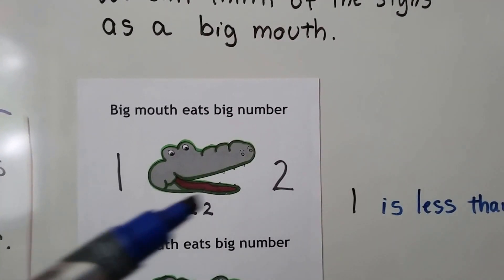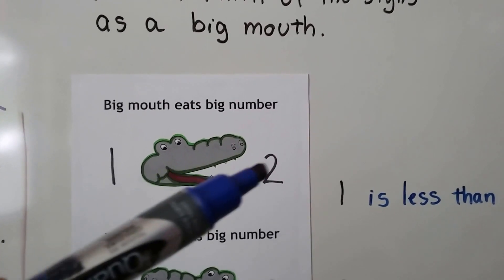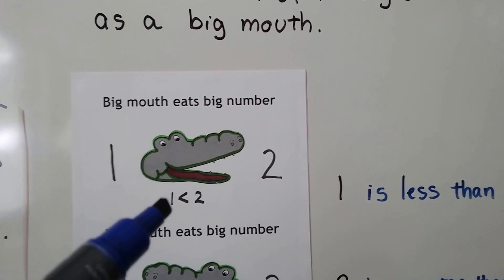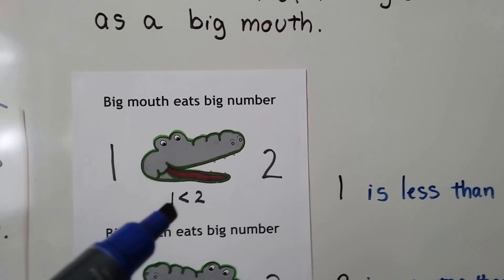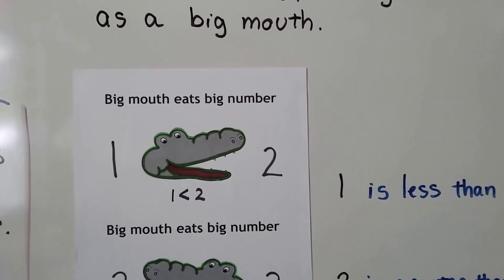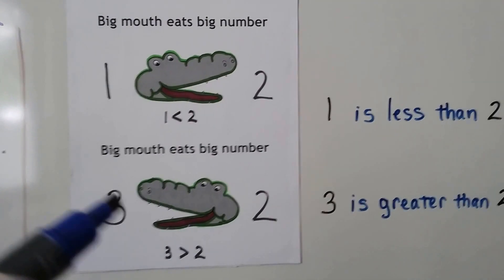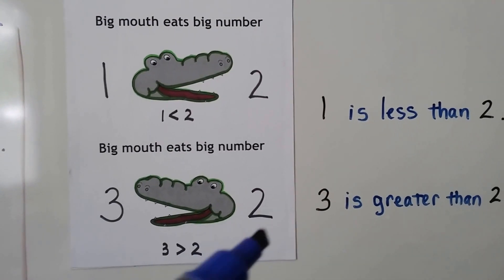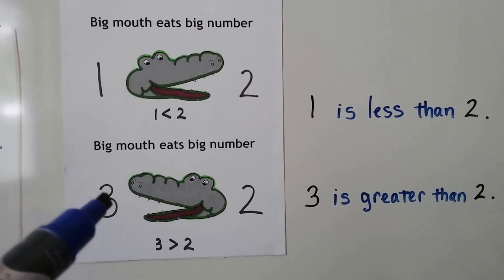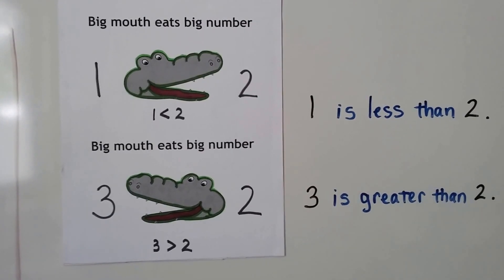We can think of the signs as a big mouth and the big mouth eats the big number. We have a one and a two — the big mouth eats the big number. One is less than two and it faces the bigger number. Now we have a three and a two. Three is bigger, three is greater than two.